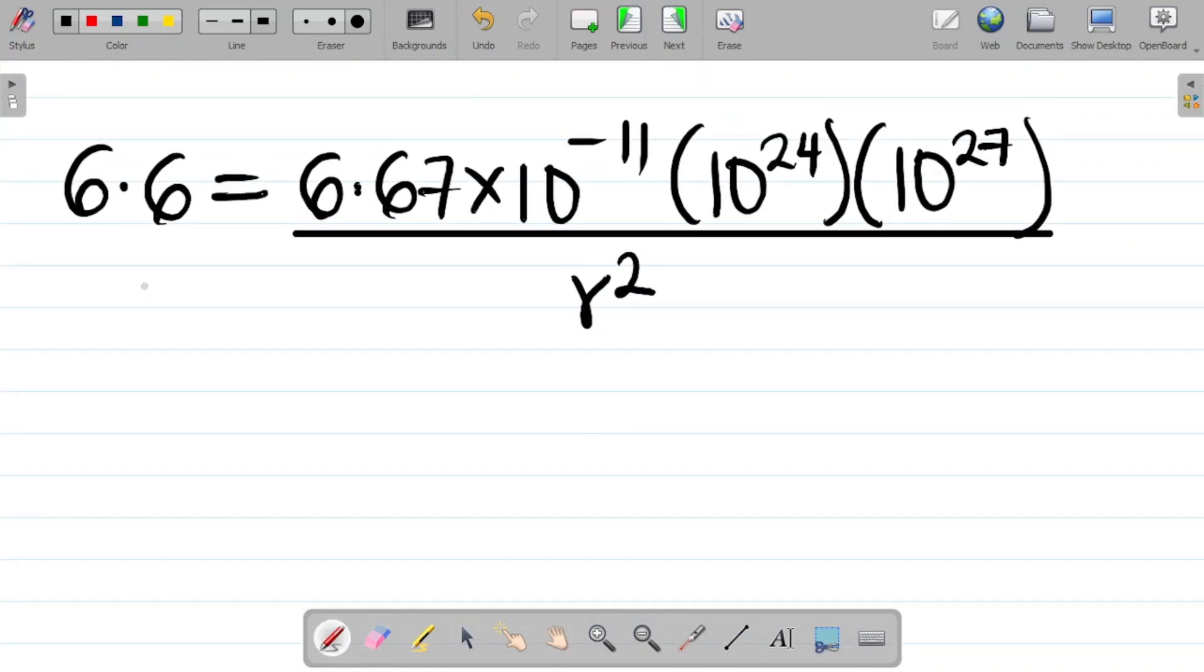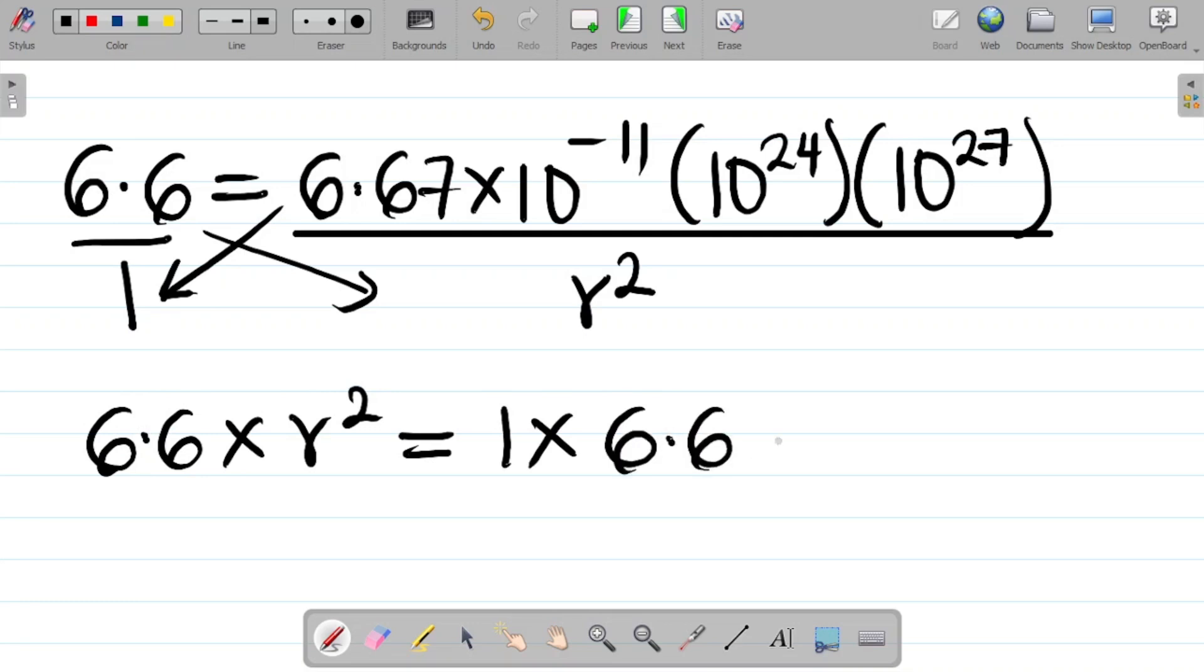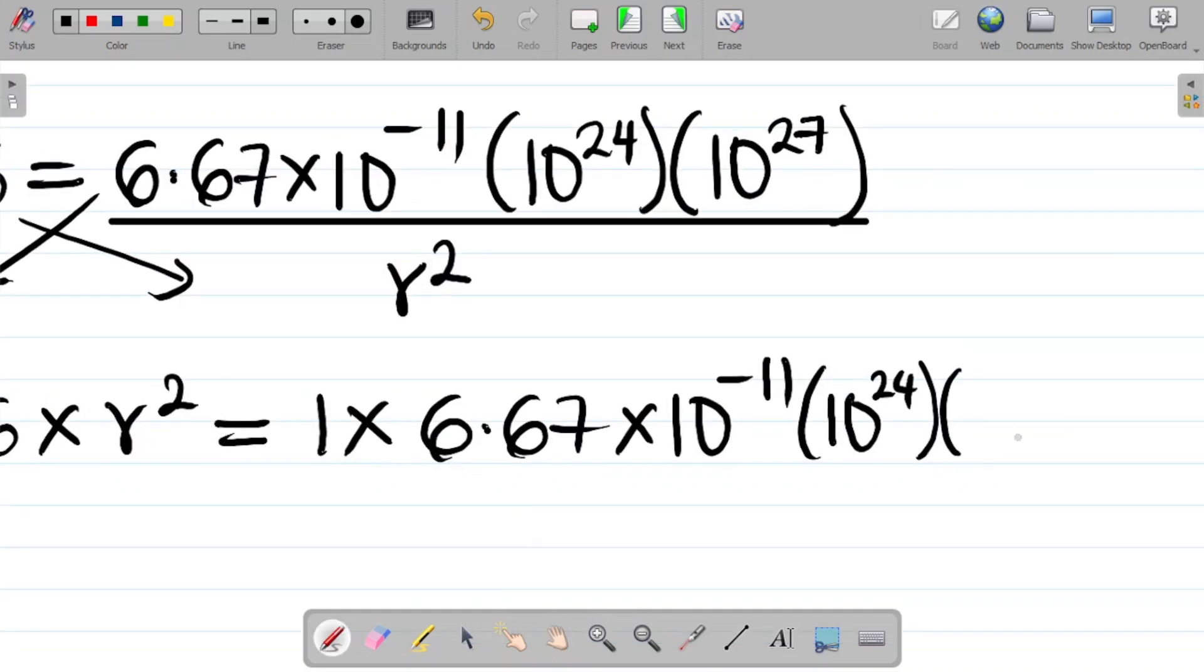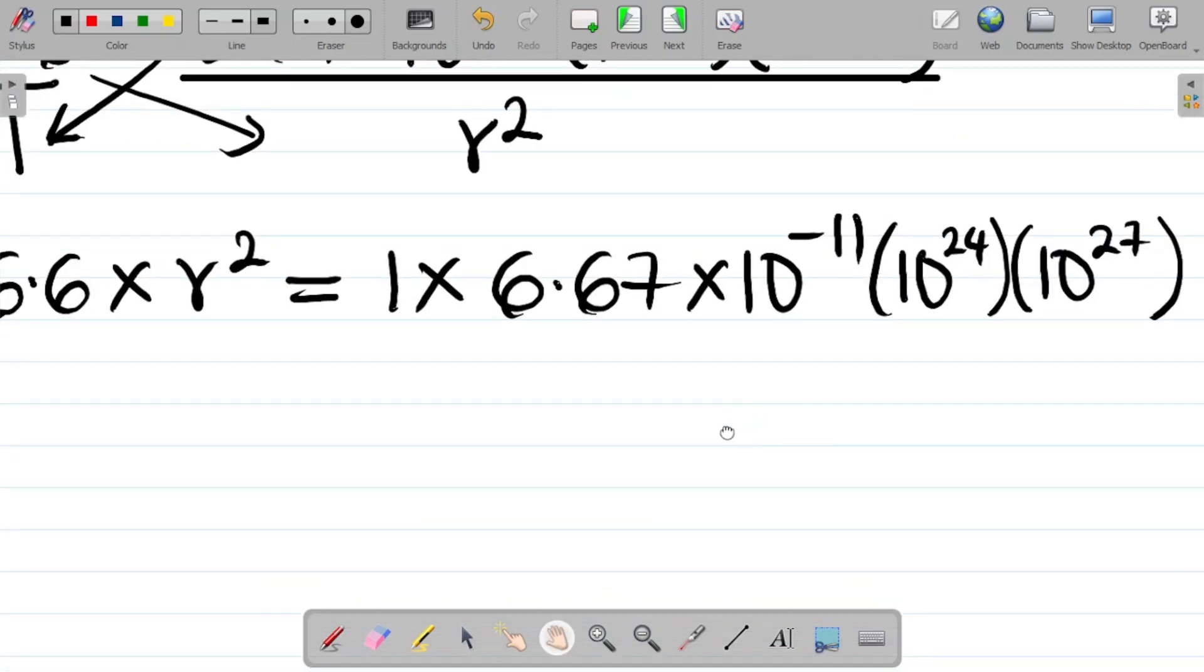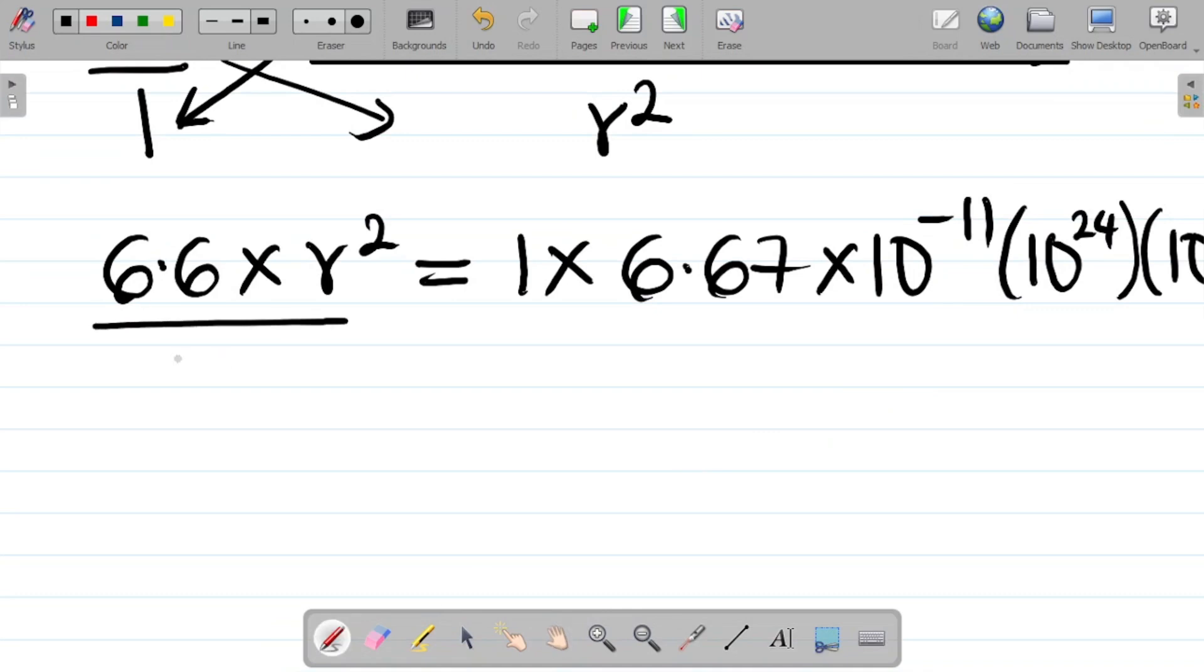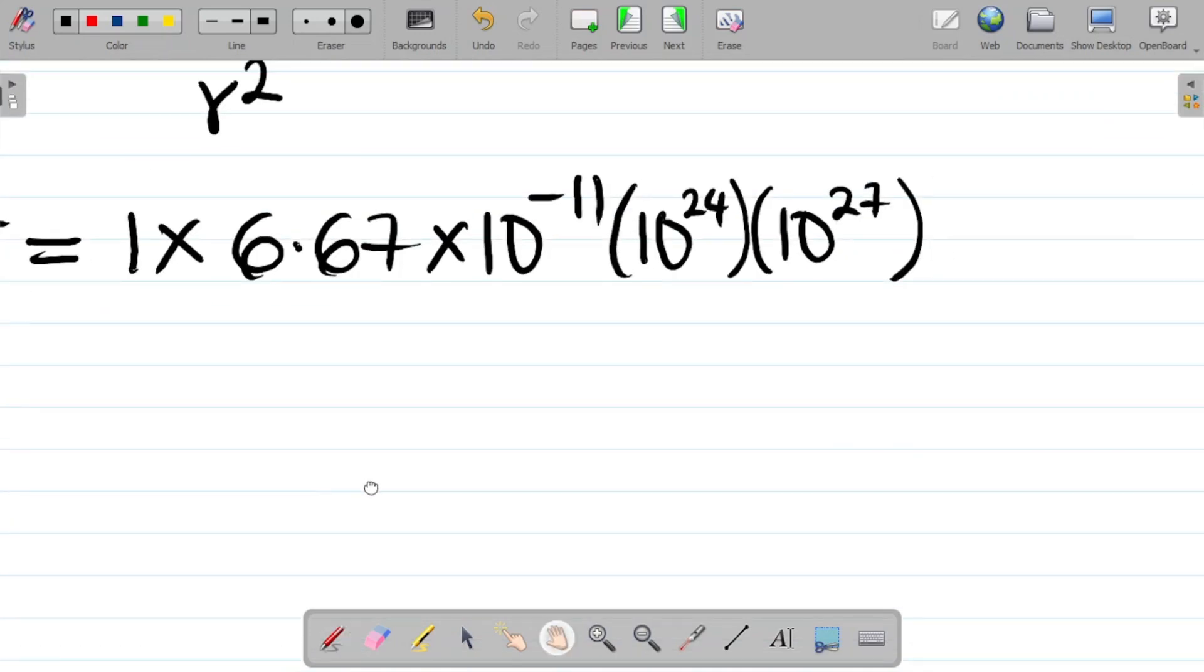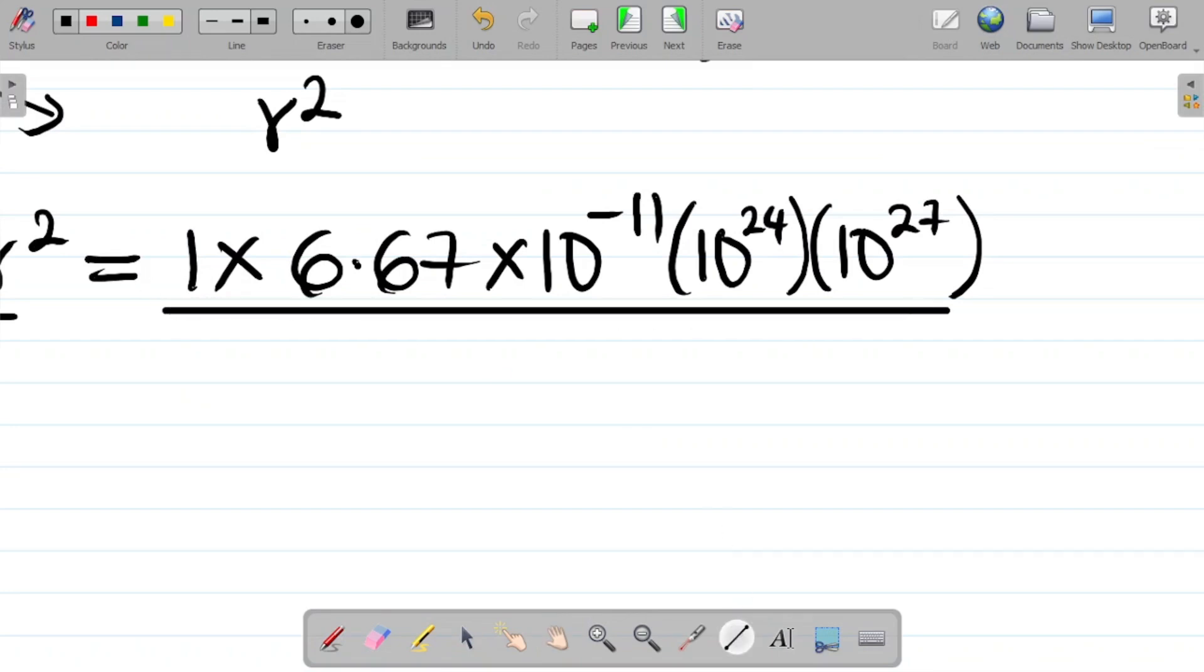From here, the mathematical idea is that this becomes all over 1. So I'll be cross-multiplying. If I cross-multiply, I have 6.6 times R squared equals 1 times 6.67 times 10 to power minus 11 into 10 to power 24 into 10 to power 27.